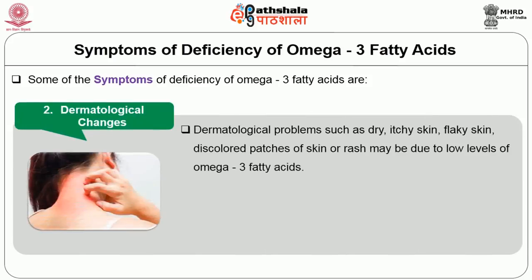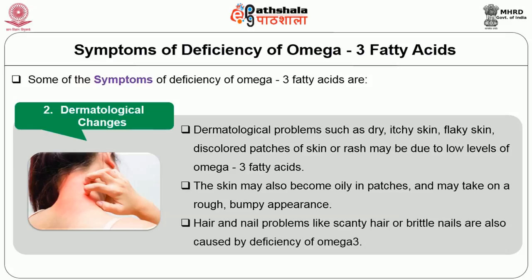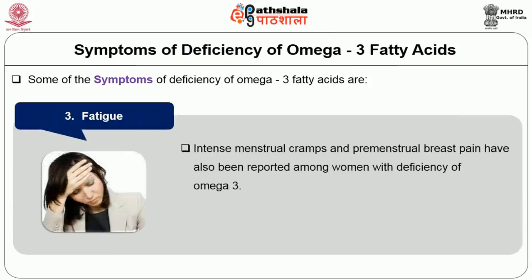Dermatological changes are also a symptom of omega 3 deficiency. Problems such as dry, itchy skin, flaky skin, discolored patches of skin, or rash may be due to low levels of omega 3 fatty acids. The skin may also become oily in patches and take on a rough, bumpy appearance. Hair and nail problems like scanty hair or brittle nails are also caused by omega 3 deficiency. Fatigue, intense menstrual cramps, and pre-menstrual breast pain have also been reported among women with a deficiency of omega 3.